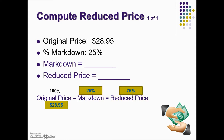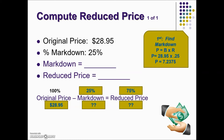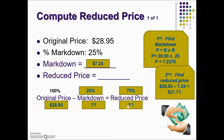We have the original price and a couple of options for how to solve this. They're asking for both quantities, so we could solve for either one first. If we solve for the markdown first, we have a base and a rate and we're looking for the part. To solve for part, we take base times rate as a decimal: 0.25 gives us a value that we round to the nearest cent, equaling $7.24. Once we have our markdown, we find the reduced price by subtracting the markdown from the original price.